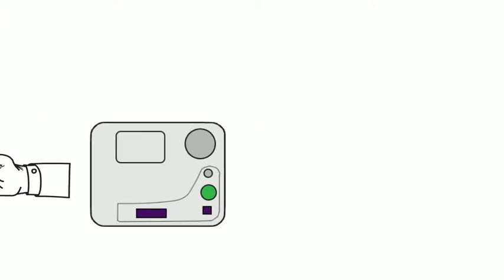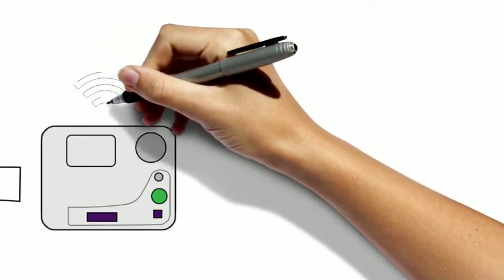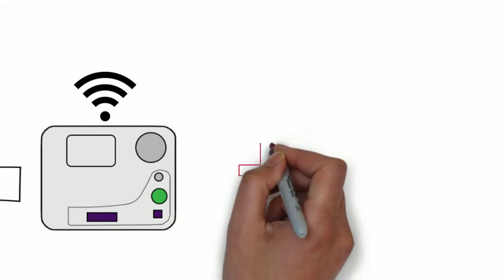To get started, you'll need two things: a compatible reading device and access to a wireless network.